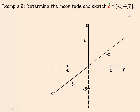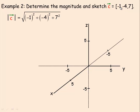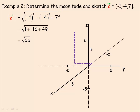In this example, we're asked to determine the magnitude and sketch the vector (-1, -4, 7). The magnitude would be the square root of (-1)² + (-4)² + 7², which is the root of 1 + 16 + 49. That's the root of 66, so that's how long this vector is. To sketch it: negative 1 is the x component, so we go 1 in the negative x direction; negative 4 in the negative y direction; and then 7 up, because the z component is 7. To make it look more three dimensional, I'll draw a box around that.